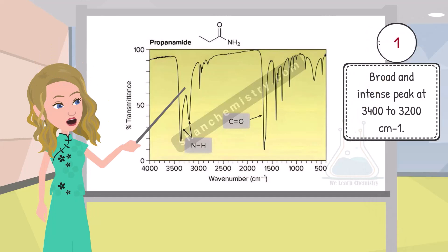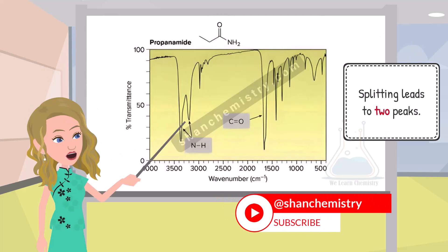a broad and intense peak centered around 3400 to 3200 per cm. However, it can sometimes exhibit additional fine structure or splitting, leading to the appearance of two peaks.